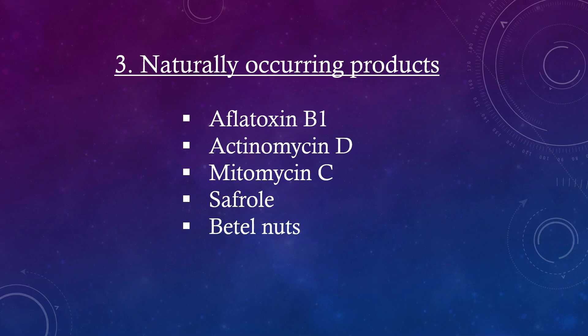Naturally occurring carcinogenic products include aflatoxin B1, actinomycin D, mitomycin C, safrole, and betel nuts.